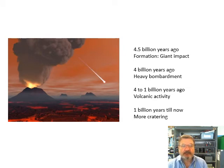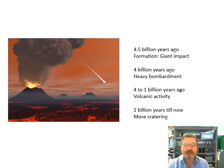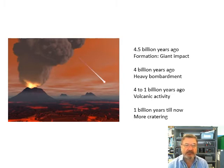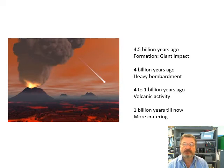A bit of information about the formation of the moon: we'll talk later about the giant impact hypothesis, which is the main theory for how the moon formed about four and a half billion years ago. For four billion years, lots of stuff bashing into it — heavy bombardment, loads of asteroids and things smacking into it. Four to one billion years ago, lots of volcanic activity — lots of evidence of volcanoes on the moon, though not now. And then in the last billion years, more cratering.